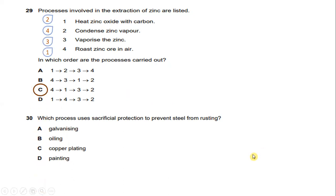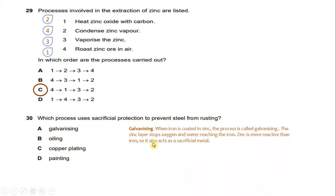Which process uses sacrificial protection to prevent steel from rusting? The answer is galvanizing. Galvanizing is the process where iron is coated in zinc. The zinc layer stops oxygen and water from reaching the iron. Since zinc is more reactive than iron, it also acts as a sacrificial metal. For question 30, the answer is A.